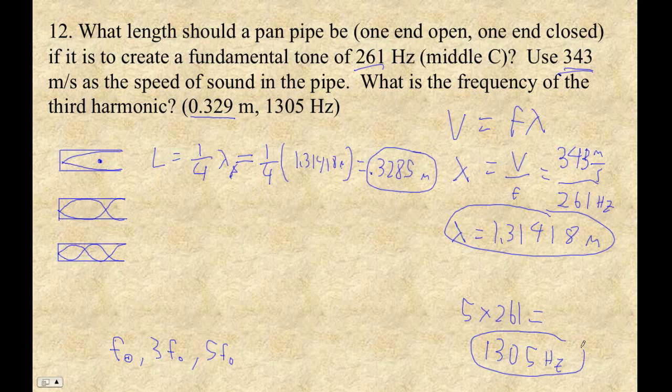So five times 261 is 1305 hertz. Now let's suppose you forget this, that you don't write this in your little cheat sheet, that the pattern is 1F naught, 3F naught, 5F naught, 7F naught, 9F naught, et cetera. Let's say you forget that, you still can get it.